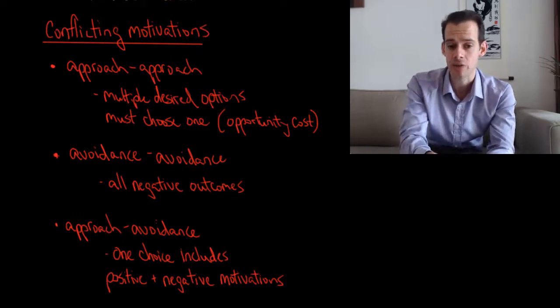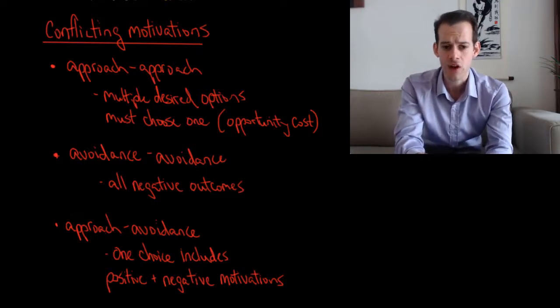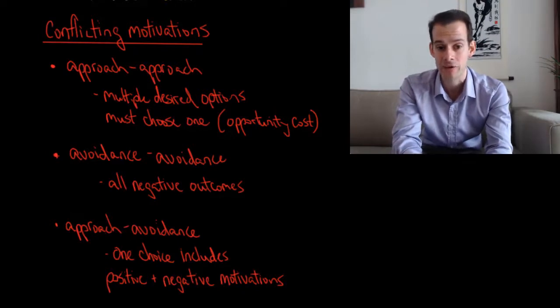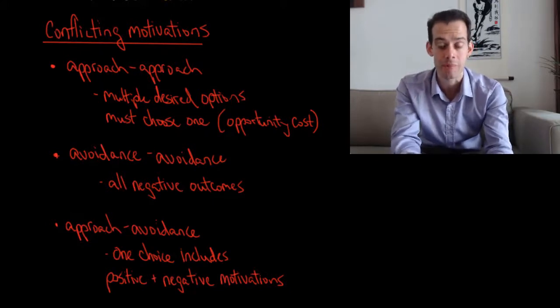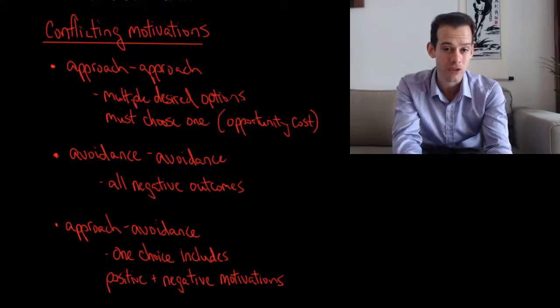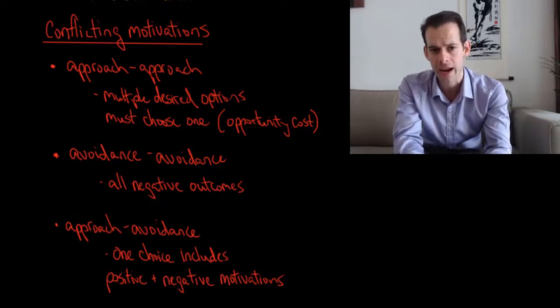Lastly, we have what's called approach-avoidance conflict. This is the idea that one of the choices includes both positive and negative motivations. There's an approach motivation involved, but there's also an avoidance motivation involved, and we can't separate them out. It's sort of a package deal. We get all of these things in making that choice, even though we don't want some of them.